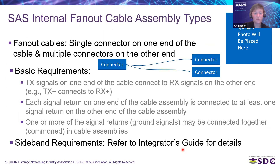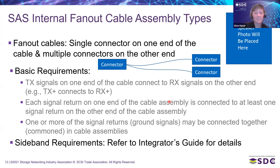Next, we have our internal fanout cables. Unlike symmetric cables, these have one connector at one end and multiple connectors on the other end — sometimes referred to as Y cables or breakout cables. Basic requirements are fairly similar: TX on one end connects to RX on the other end. Each signal return on one end is connected to at least one signal return on the other end, and one or more of the signal returns or ground signals may be commoned in the cable assemblies. For sideband requirements, please refer to the Integrator's Guide for details.